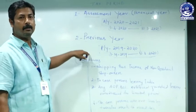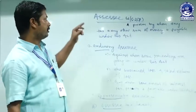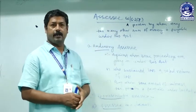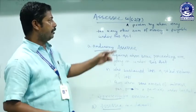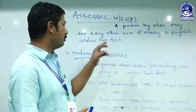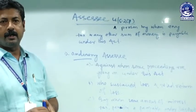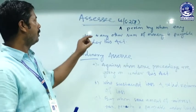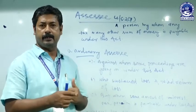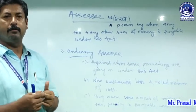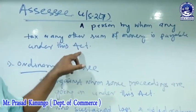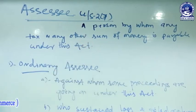So here we have covered assessment year and previous year. Now I am going to discuss regarding the assessee under Section 2, clause 7 of the Income Tax Act 1961. An assessee is a person by whom any tax or any other sum of money is payable under this Act — whether that is interest, penalty, or any other amount payable as per the Income Tax Act 1961. That person is known as an assessee.